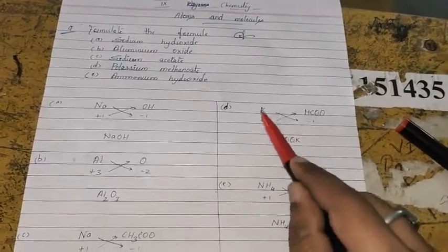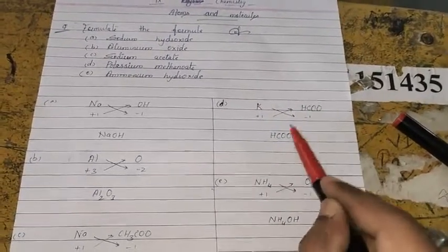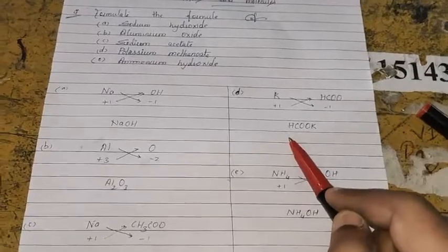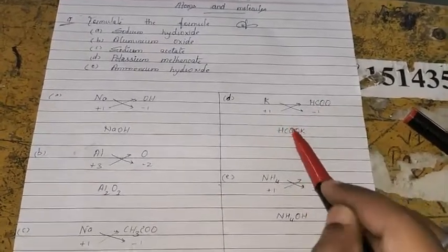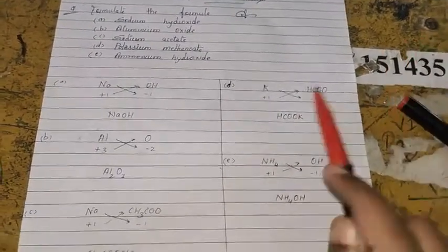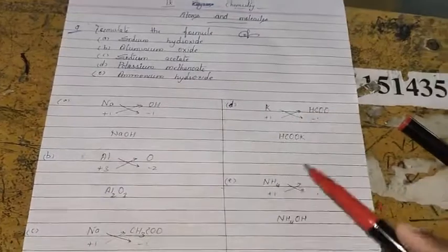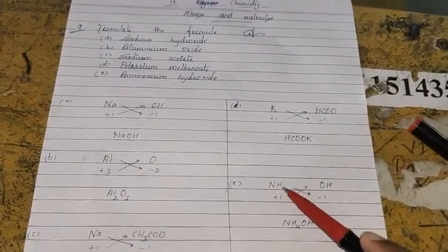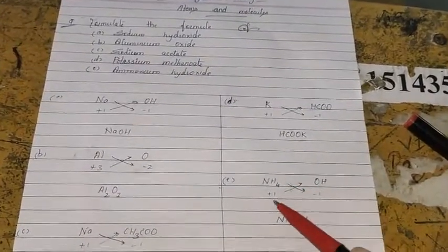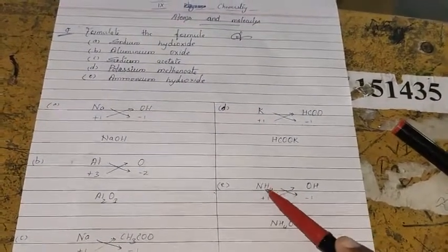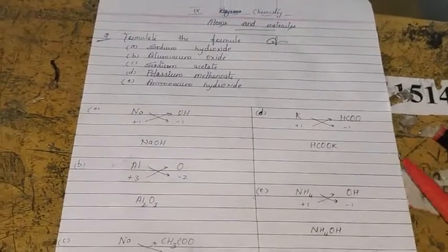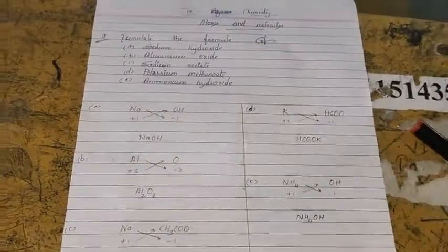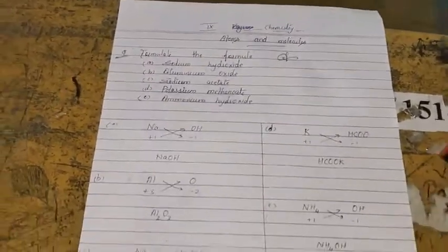Similarly, for potassium methanoate, the charge is +1 and −1. Using the criss-cross method and applying the same rule, we do not write KHCOO; rather, we write HCOOk. For ammonium hydroxide, NH₄ has a +1 charge and OH has a −1 charge, giving NH₄OH. So this is all about formulating chemical formulas using the criss-cross method. Thank you.